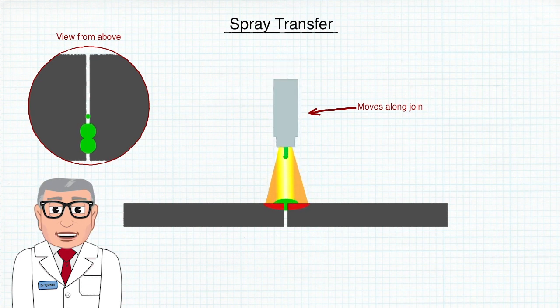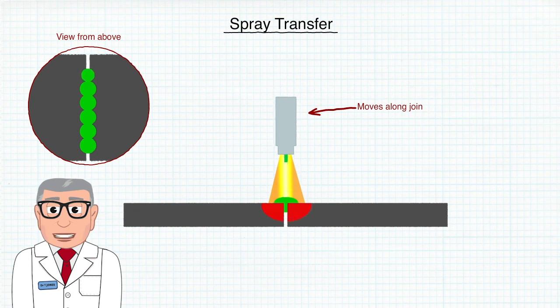It occurs in an inert gas atmosphere with a minimum of 80% argon shielding gas. Only small droplets are formed which transfer across the arc at relatively high frequency.